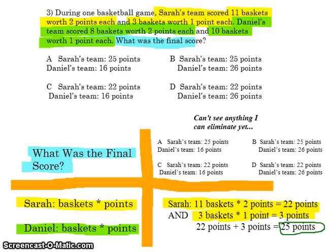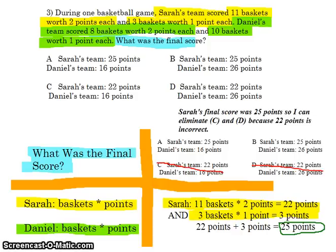That was a multi-step problem. I had to multiply two sets of baskets based on their points, and once I got those answers, I had to add them together. Now I'm going to go back and see if there are any answer choices I can eliminate, knowing that Sarah's team scored 25 points.